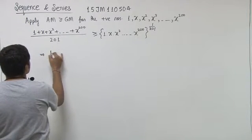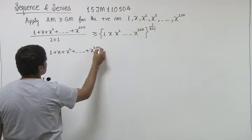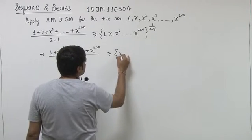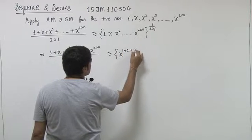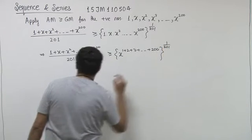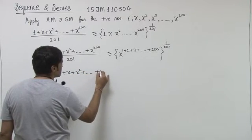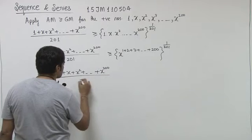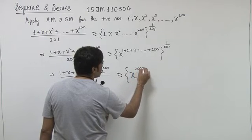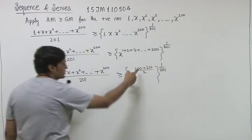We can say that this will become x to the power 1 plus 2 plus 3, which is x to the power n times n plus 1 upon 2, whole to the power 1 upon 201. So it is x to the power 100.